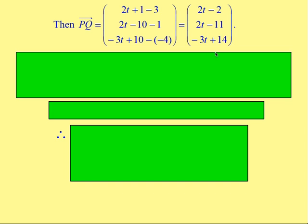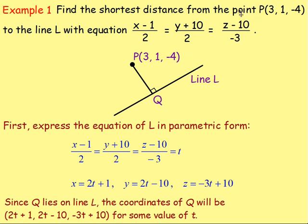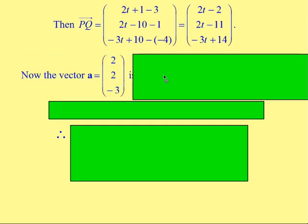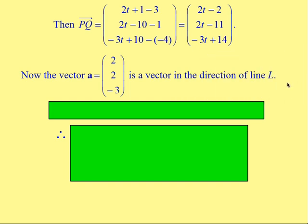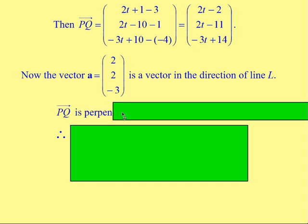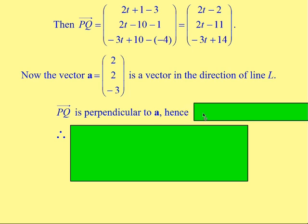If you think about the vector in the direction of line L — remember that the denominators in the line equation give the components of the direction vector. So vector A has components (2, 2, −3) and is in the direction of line L. We've got the components of vector PQ and the components of vector A, and crucially, these two vectors are perpendicular to one another.